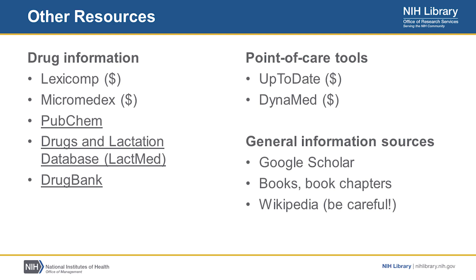Some other resources you may want to look at are specific to drug information. Lexicomp and Micromedex are two fee-based resources that have great comprehensive information, but some free ones to consider include PubChem, the Drugs and Lactation Database, or DrugBank. Then there are also point-of-care tools — these are evidence-based medicine summaries that could help you with the discovery of literature, but also provide some expert opinion that is outside the scope of the peer-reviewed literature. And then there are general information sources such as Google Scholar, books and book chapters, and even Wikipedia. A lot of times we think of Wikipedia as not very safe to use, but it can be very valuable, especially with certain rare diseases, because it is going to be one of the most comprehensive places available to many people to find that information.